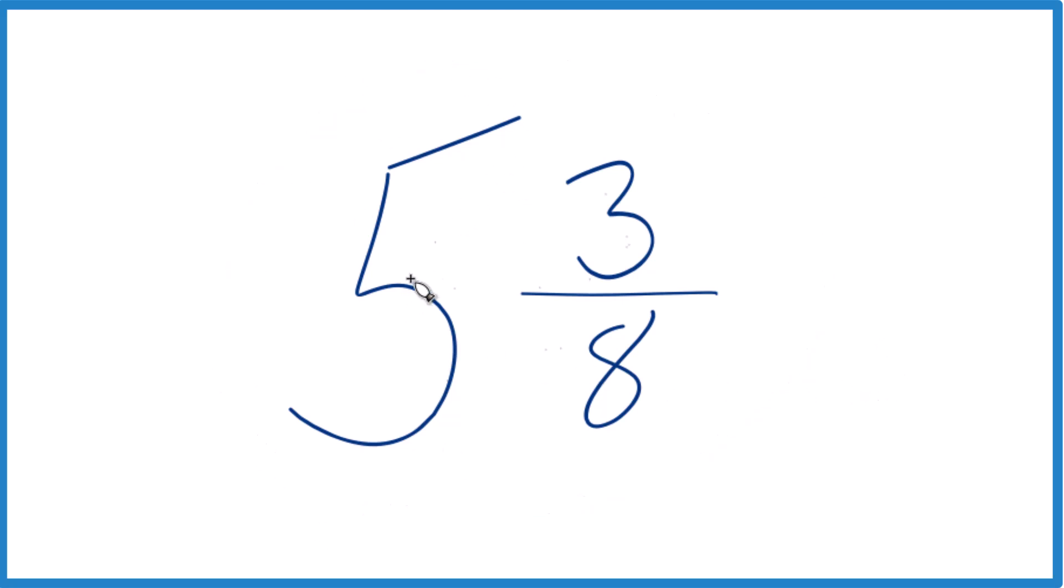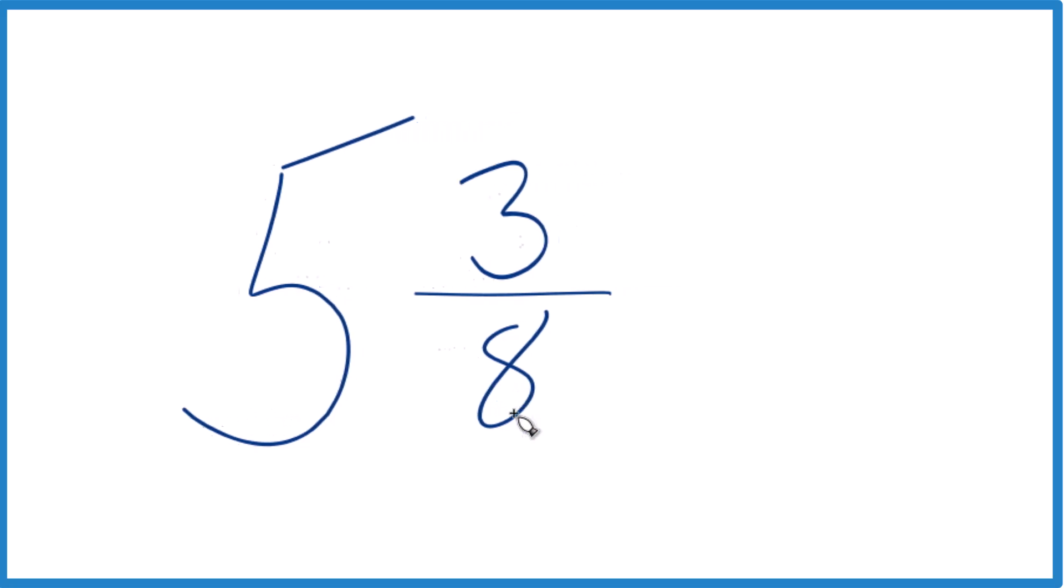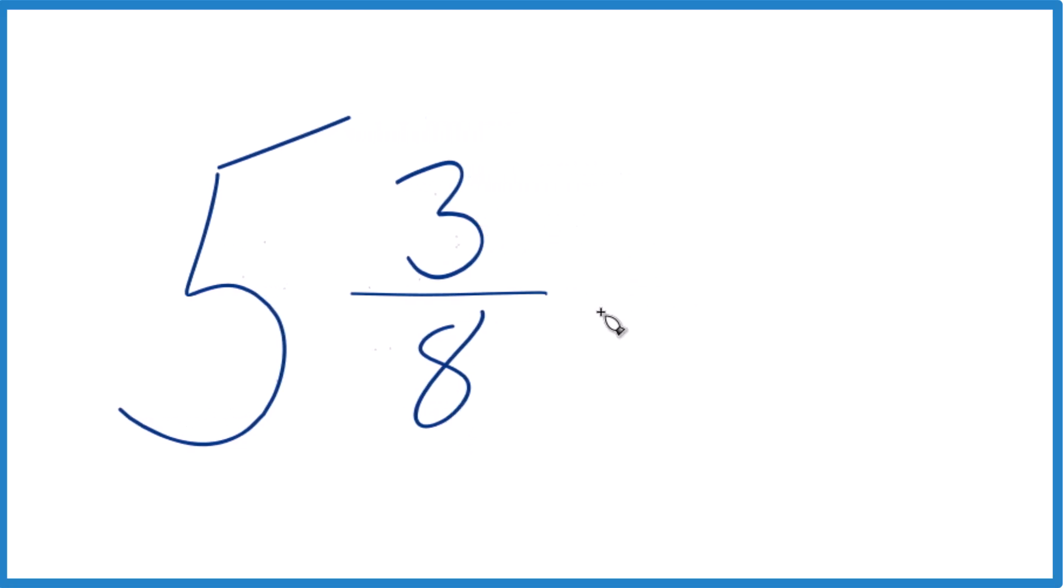You take the whole number 5, multiply that by 8. 5 times 8, that's 40. Then you add the 3. You end up with 43, and that's going to be the numerator here.